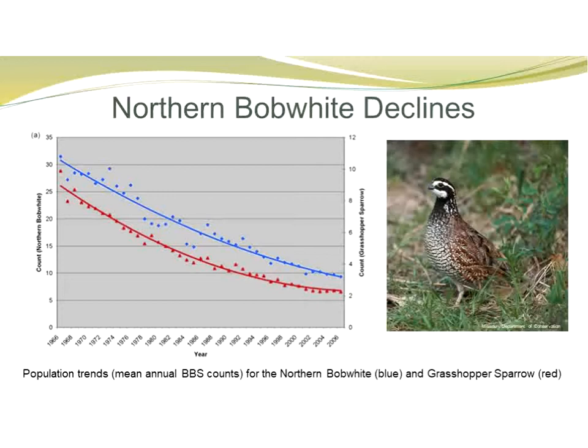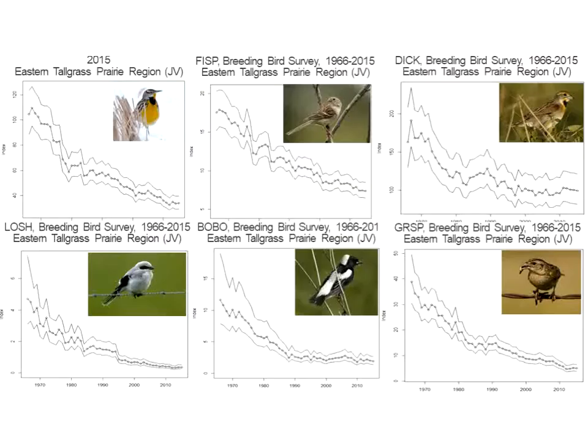Habitat loss is a main factor in these population declines. And it's not just quail — it's other grassland bird species as well. Here are six examples of grassland birds that in the Midwest region are typically considered common — the eastern meadowlark, field sparrow, dickcissel, loggerhead shrike, bobolink, and grasshopper sparrow — and you can see from the downward trending population graphs that all these birds are also experiencing significant population declines.